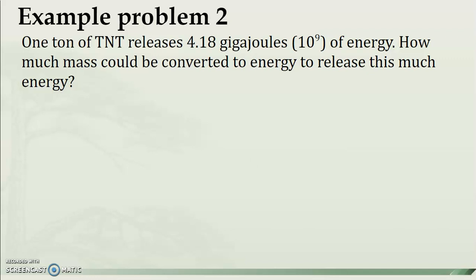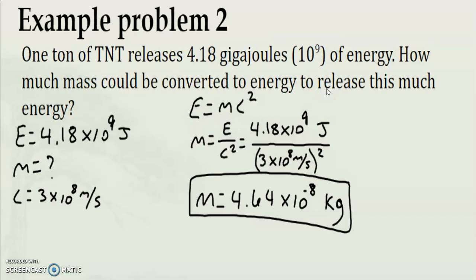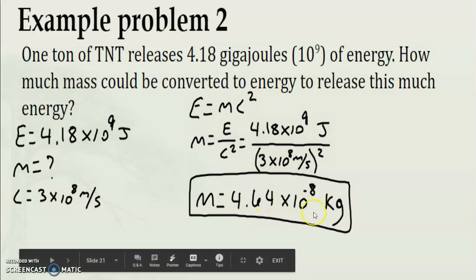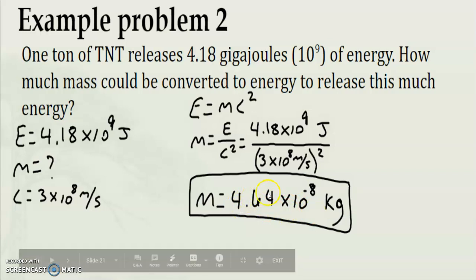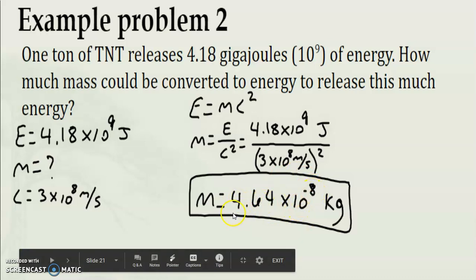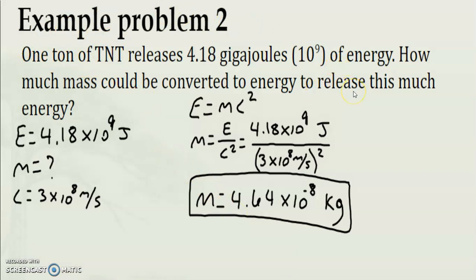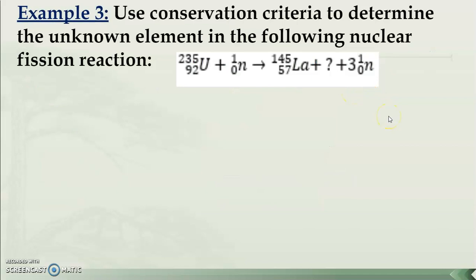Here's an example problem: one ton of TNT releases 4.18 gigajoules of energy. How much mass would need to be converted to produce that energy? Using E = mc²: m = E/c² = (4.18 × 10⁹ J) / (3 × 10⁸ m/s)² = 4.64 × 10⁻⁸ kilograms. That is tiny — about the size of a grain of sand — yet equivalent to one ton of TNT. This illustrates why nuclear reactions are so powerful.